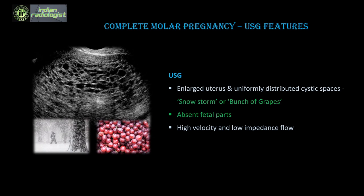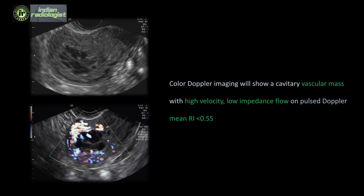In complete molar pregnancy, we classically see an enlarged uterus disproportionate to the expected gestational age with uniformly distributed cystic spaces, giving the classical snowstorm or bunch-of-grapes appearance. The most classical finding is absence of fetal parts. These lesions can be vascular, showing high velocity and low impedance flow with resistance as low as less than 0.5.